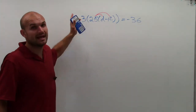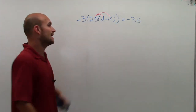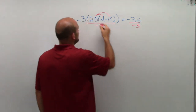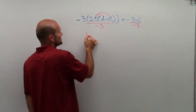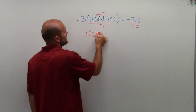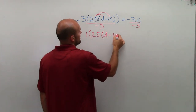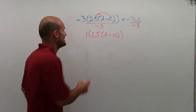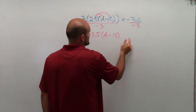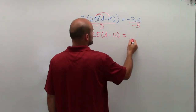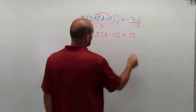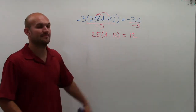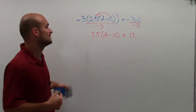To undo negative 3 times all that stuff, I can just divide by negative 3. So now, negative 3 divided by negative 3 gives us 1 times the quantity 25 times d minus 12. Well, 1 times that is just going to be that by the identity property. So I can actually now get rid of these parentheses, and this is now going to equal a positive 12. Again, this doesn't always work — it might not be the nicest — but it's important for you to understand we can use this process.